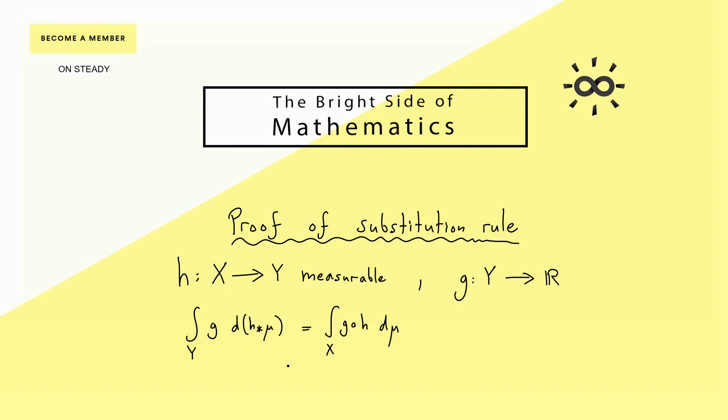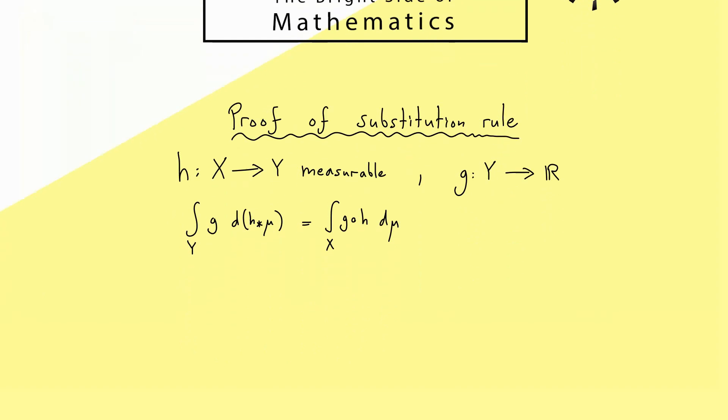It tells us that instead of calculating the integral of g, we can integrate the function g ∘ h over the measure space X. The formula always holds if you know that one of the two integrals here exists. And that's the whole thing we want to prove now.